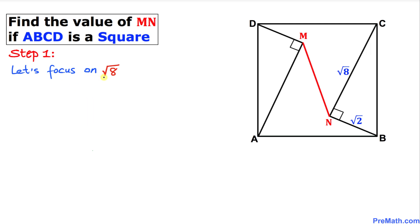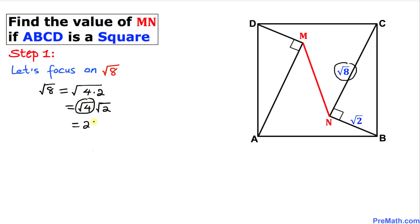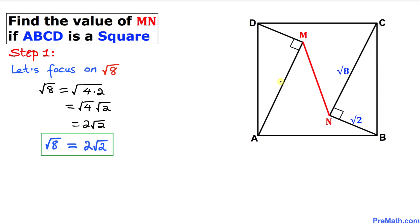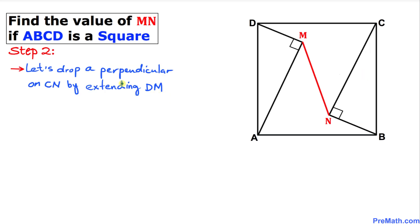Our very first step: let's simplify √8. We can write √8 as √(4 × 2), which splits into √4 × √2. Since √4 = 2, we get √8 = 2√2.